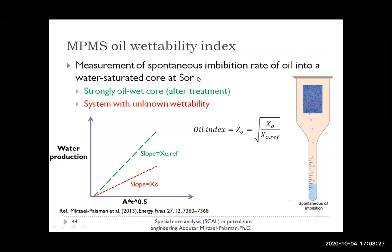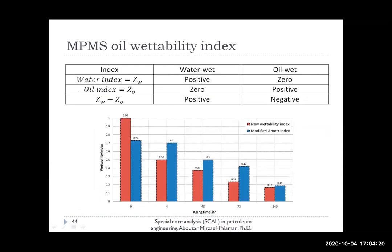We can also calculate the oil wettability index using MPMS. For this we need to measure the spontaneous imbibition rate of oil for two systems: a reference system that should be strongly oil-wet — obtained by treatment with chemical agents — and the system with unknown wettability. We plot water production data versus a dimensionless time group, and from the slopes calculate the oil index. For water-wet samples, the water index is positive and oil index is zero. For oil-wet samples, the water index is zero and the oil index is positive. We can also define a combined index by subtracting water and oil indices — water-wet samples will have a positive and oil-wet samples will have a negative index.